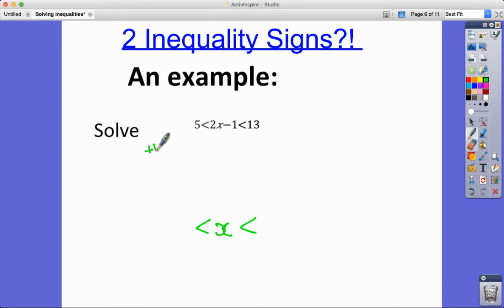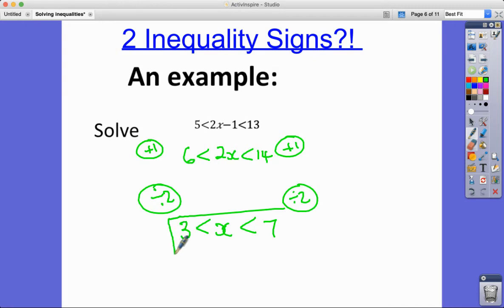The most obvious thing to do first is to add 1, so I get 2x in the middle, and adding 1 to each of these I get 14 and I get 6. And then dividing by 2 at this point, so note that I'm not dividing by a negative number, I don't need to do any flipping or anything, and so what I get then is 3 and 7. So x lies between 3 and 7.